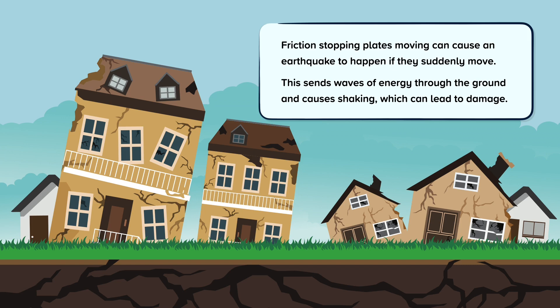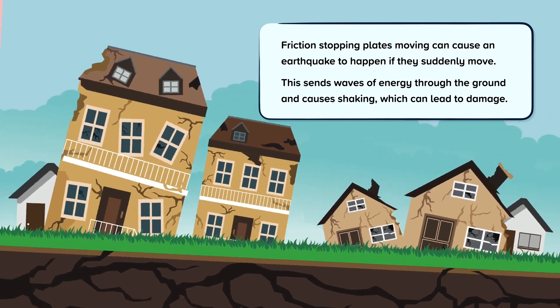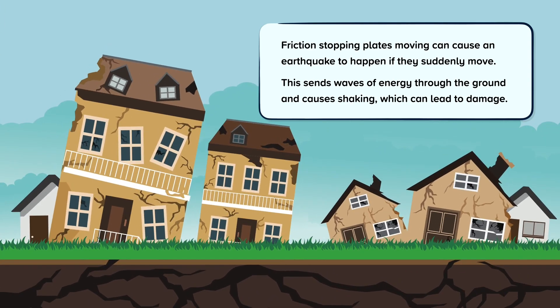Friction stopping plates moving can cause an earthquake to happen if they suddenly move. This sends waves of energy through the ground and causes shaking, which can lead to damage in buildings and other things.